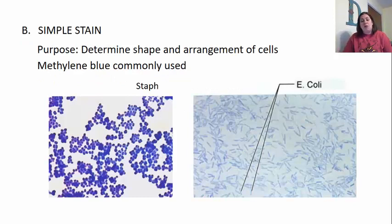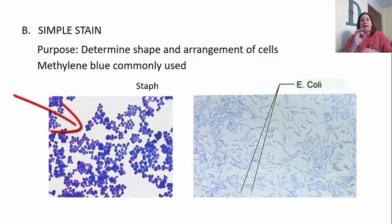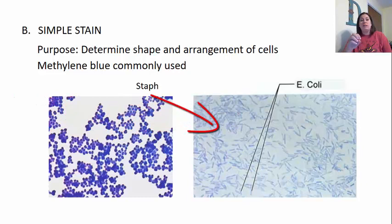One way to stain is called a simple stain. The purpose of a simple stain is to determine the shape and arrangement of cells — whether it's bacillus, coccus, or spirillum — and to see if they are in clusters, strings, and so on. A very common simple stain used is methylene blue. For example, with staphylococcus you can see it's a circular-shaped organism in clusters, while E. coli stained with methylene blue shows more rod-shaped bacteria, which are a bacillus type.